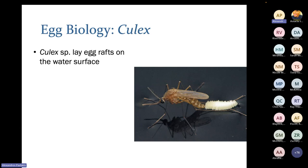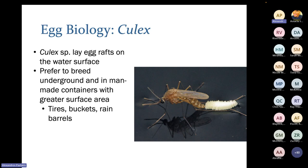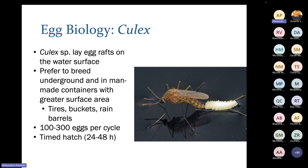Culex are a little different. They lay their eggs as rafts on the surface of the water — each individual egg forms together in a raft. These mosquitoes prefer to breed underground or in man-made containers like tires, buckets, and rain barrels. Culex lay around 100 to 300 eggs per cycle, but unlike Aedes they have a timed hatch — 24 to 48 hours after laying, the larvae emerge. These eggs are susceptible to drying, so they won't survive if the water goes away.